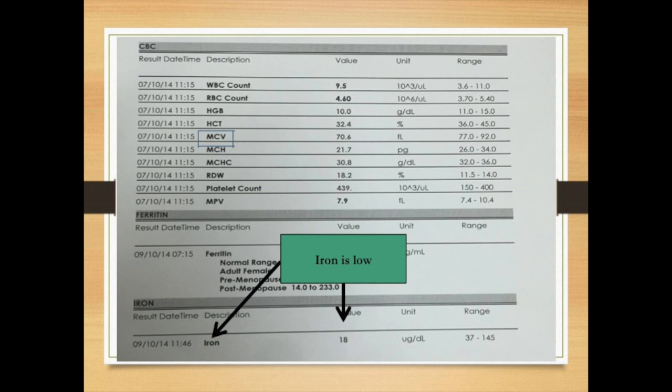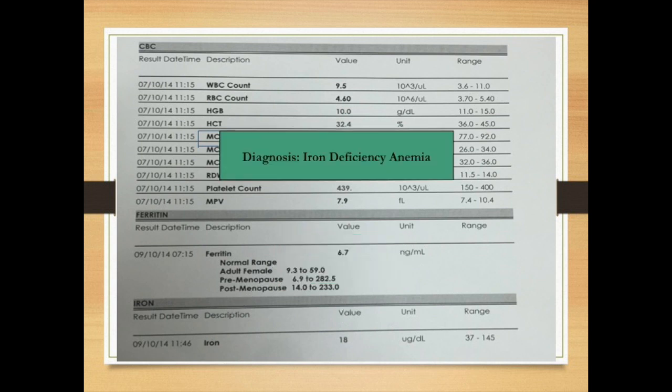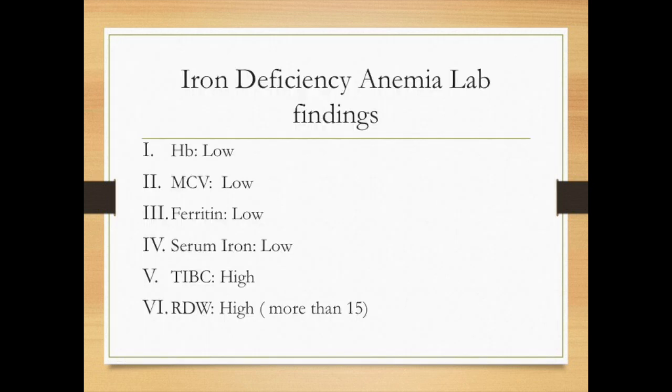Low ferritin goes with iron deficiency anemia, and the iron level is low as well, so the diagnosis is iron deficiency anemia. Here I have provided a summary of the positive lab findings in iron deficiency anemia. Thank you very much for watching this video and don't forget to subscribe.